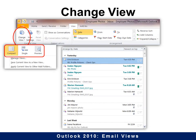Now this is the real powerful one — this is under Change Views. There are actually three tools here: Change View, View Settings, and Reset View under Current View. When we click on Change View, you have three options there as well. The first is Compact, and you can see this is compact — I have two lines showing.